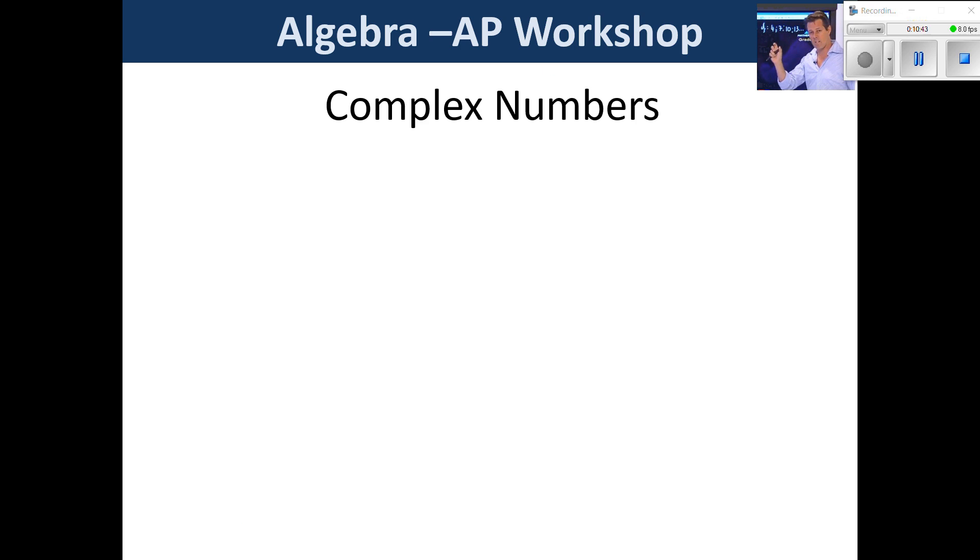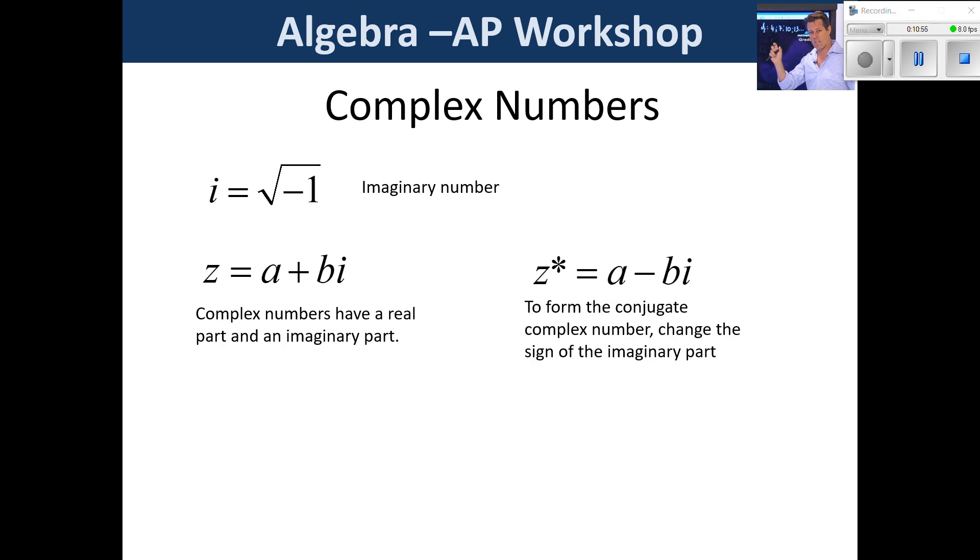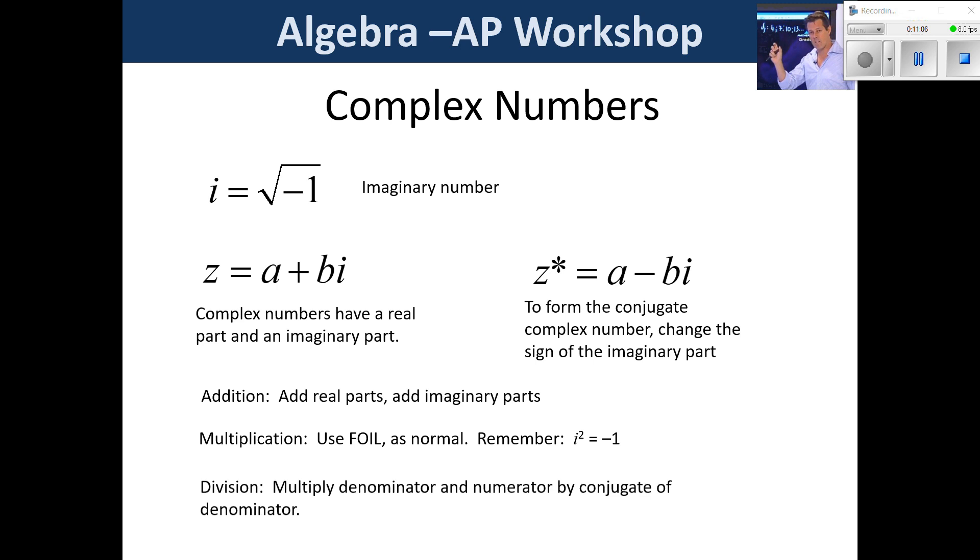Now let's go into complex numbers. Just a couple of points, the definition of an imaginary number. I hope that you're very comfortable with that. Also, if you've got z is equal to a plus bi, this z star is the conjugate. And what we notice is that it's the sign of the imaginary part that must change. And then we need to be able to add, we need to be able to multiply, we need to be able to divide. And I'm going to take you through one example of each of these so that you can perform the basic operations.